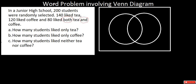In this video, we're going to study the word problem involving Venn diagrams. In a junior high school, 200 students were randomly selected. 140 liked tea, 120 liked coffee, and 80 liked both tea and coffee. How many students liked only tea? How many students liked only coffee? How many students liked neither tea nor coffee?